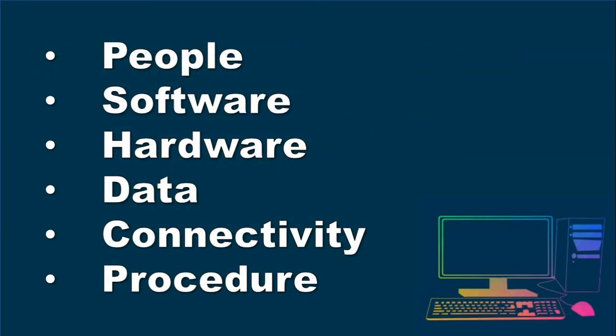So a computer system has six important elements: the people, the software, the hardware, the data, connectivity, and procedure.